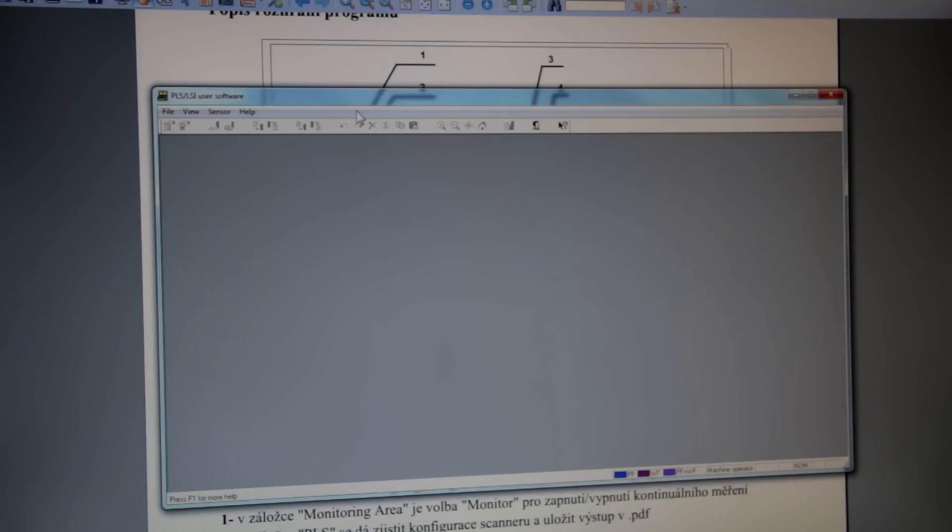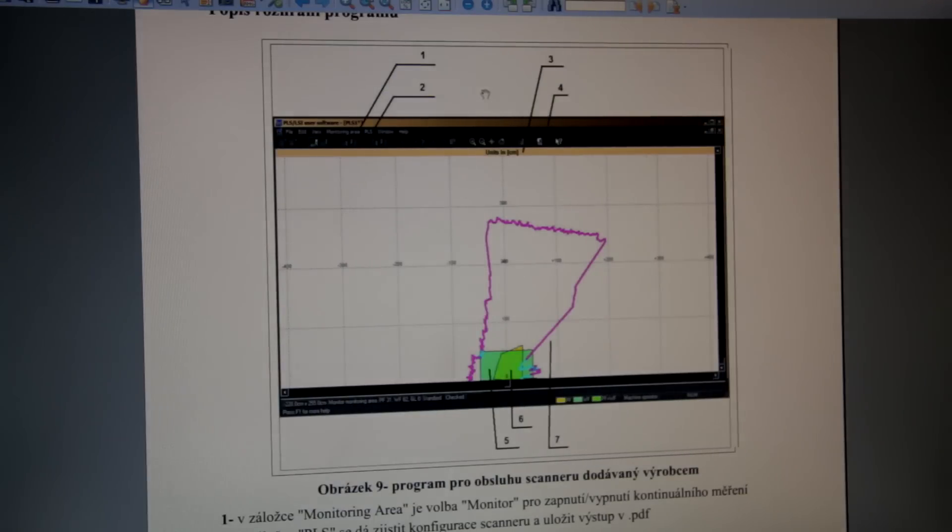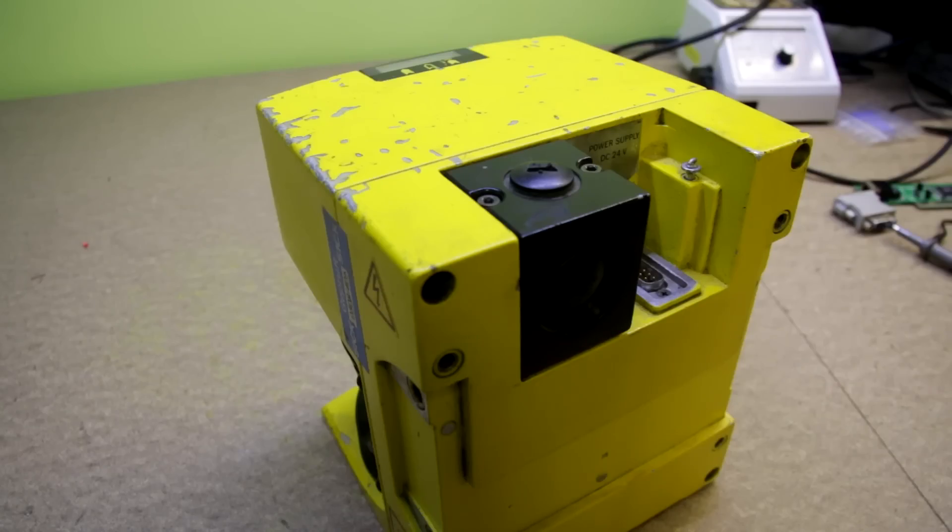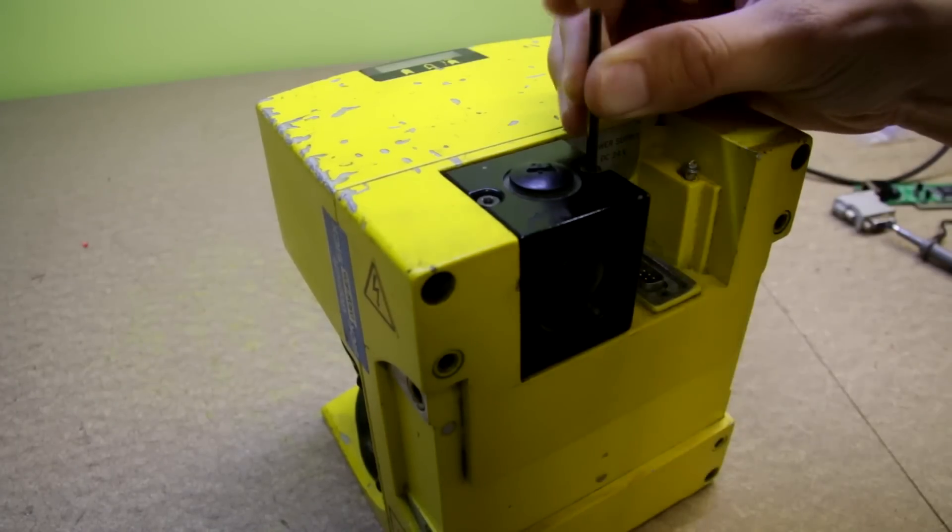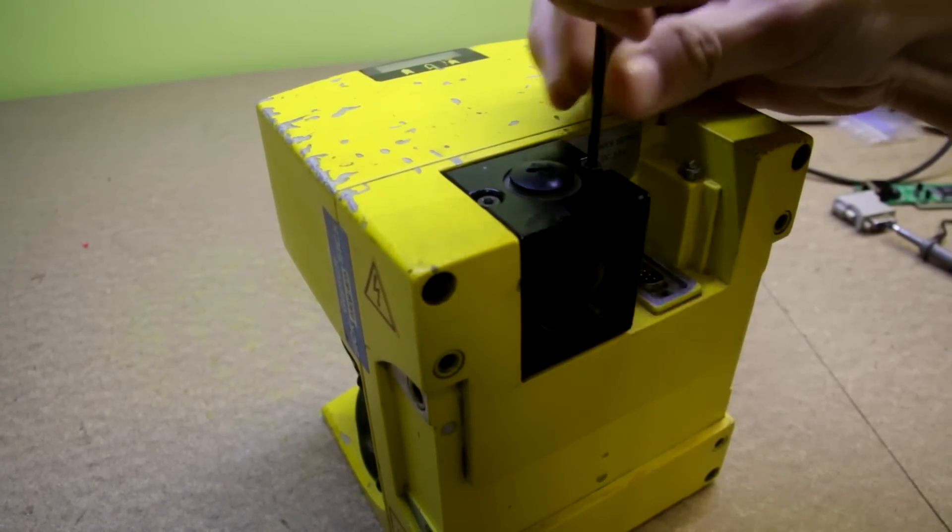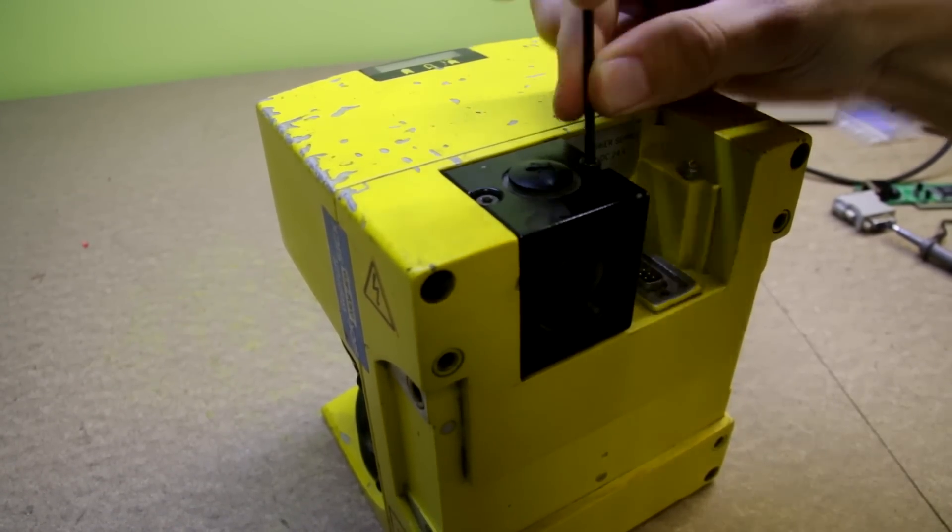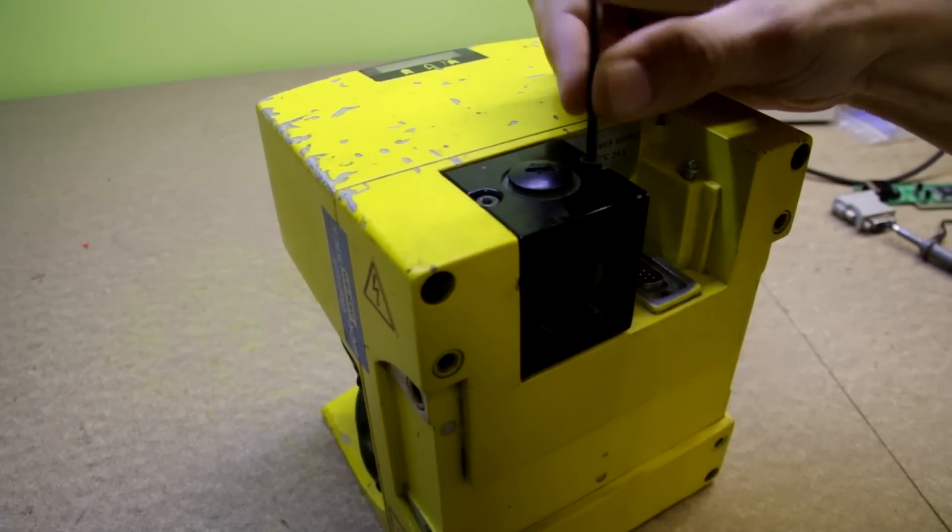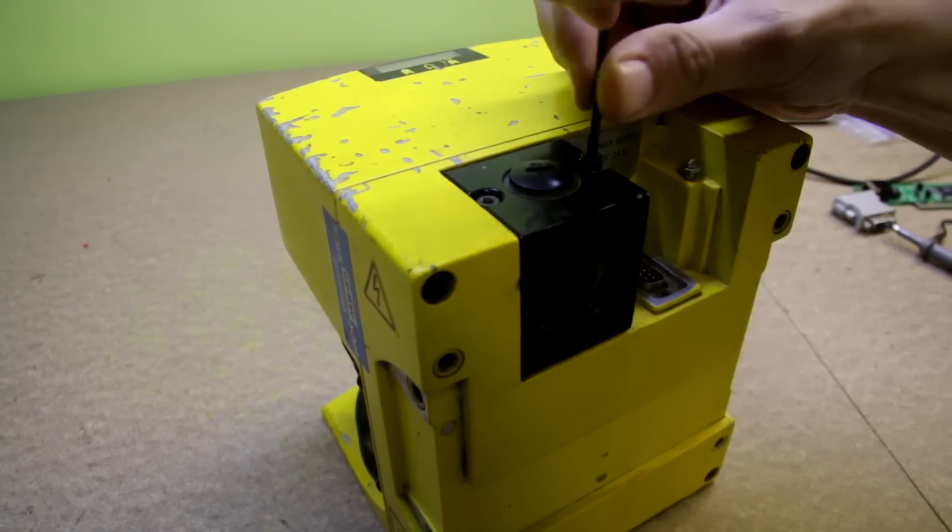So I will try to work with this software first. But before that I will have to figure out if this device is working at all and I will take a look inside how this works and what's inside. According to the manual there should be another connector for communication. Because the first one you can see here is I guess just for power supply.